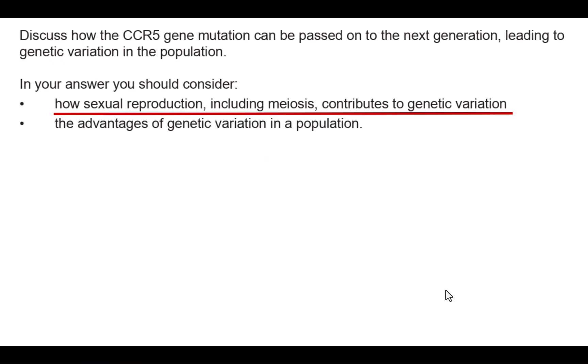The next question asks us to discuss how the CCR5 gene mutation can be passed on to the next generation, leading to variation in the population. This is generally where you're pushing more towards the merit and excellence level. There are two bullet points we should include. The first is how sexual reproduction, including meiosis, contributes to genetic variation. Under this standard, you don't need to know a lot of the detail about meiosis, but I'll run through a little bit of it here.